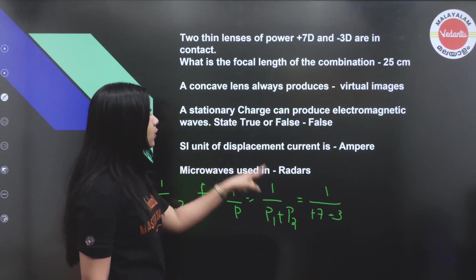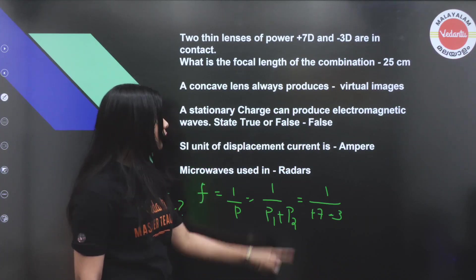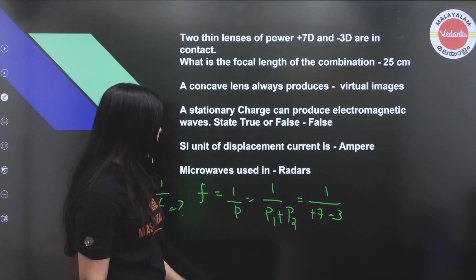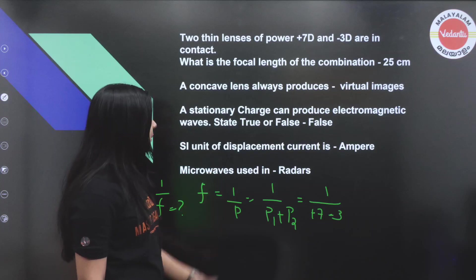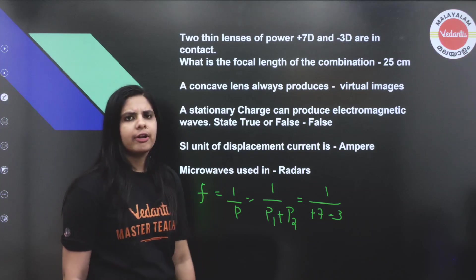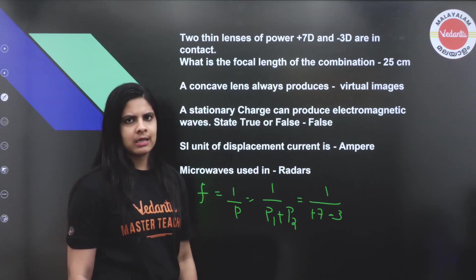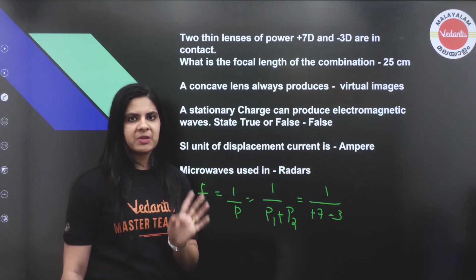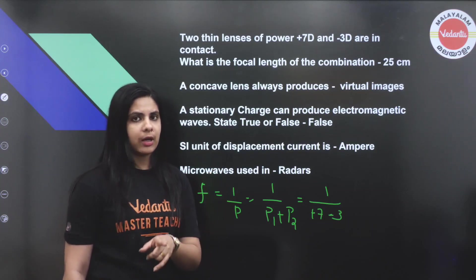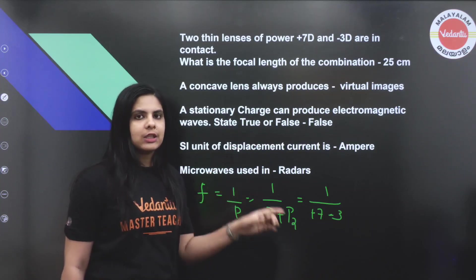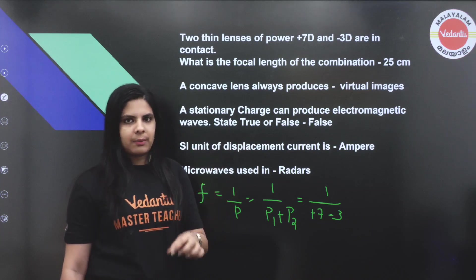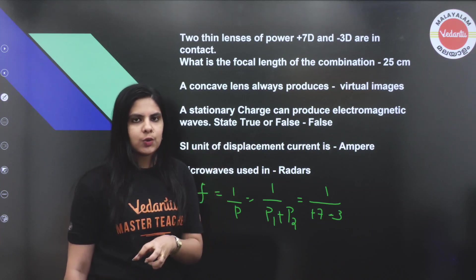The unit of displacement current is ampere. Microwaves are used in radars.